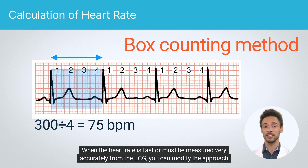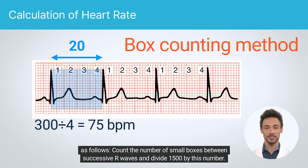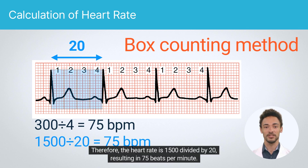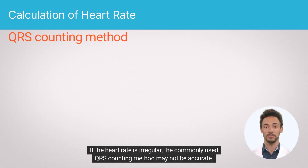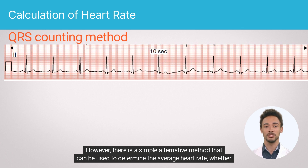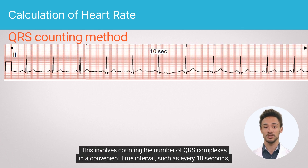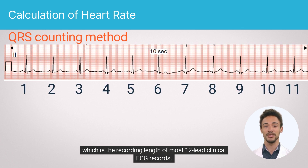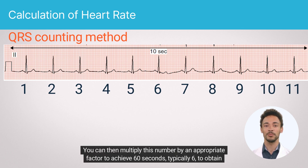When the heart rate is fast or must be measured very accurately, you can modify the approach: count the number of small boxes between successive R waves and divide 1500 by this number. In this example, 20 small time boxes are counted between QRS complexes, so the heart rate is 1500 divided by 20, resulting in 75 beats per minute. If the heart rate is irregular, the QRS counting method may not be accurate, because the time intervals between QRS complexes can vary from beat to beat. A simple alternative is to count the number of QRS complexes in a 10-second interval, then multiply by 6, to obtain the heart rate in beats per minute.